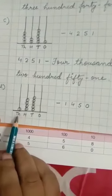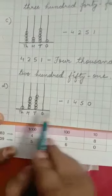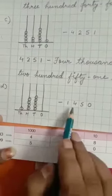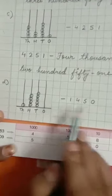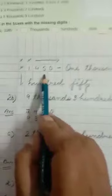So means, in thousand place, one you will write. Four place, hundred place, four. Tenth place, five. And ones place, zero. So here I have written the number. And here I have written the number name.